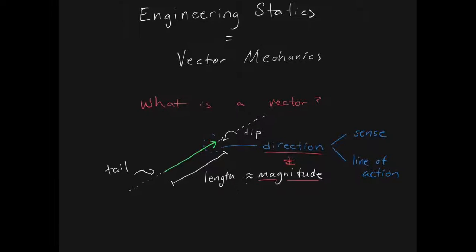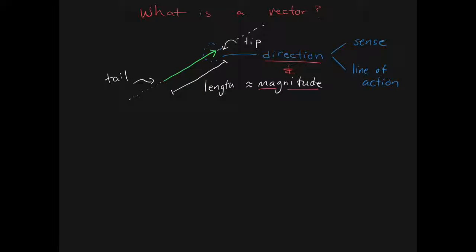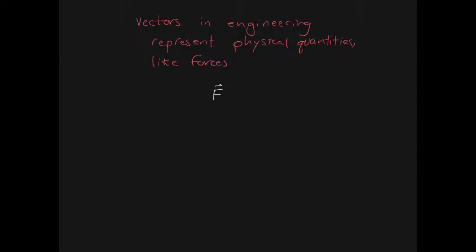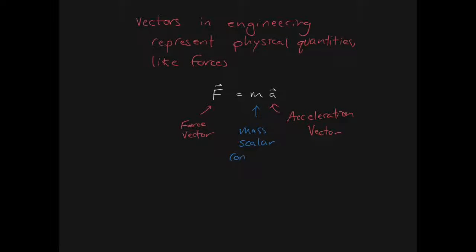Vectors have both magnitude and direction — that's really the key to representing a vector. But a vector is a mathematical quantity, so in engineering the question is: why is that useful? Vectors in engineering represent a physical quantity, like forces. We know that F equals MA. Force and acceleration are vectors — I represent them with an arrowhead notation — while mass is not a vector, which means it's a scalar, and it has only magnitude and no direction.